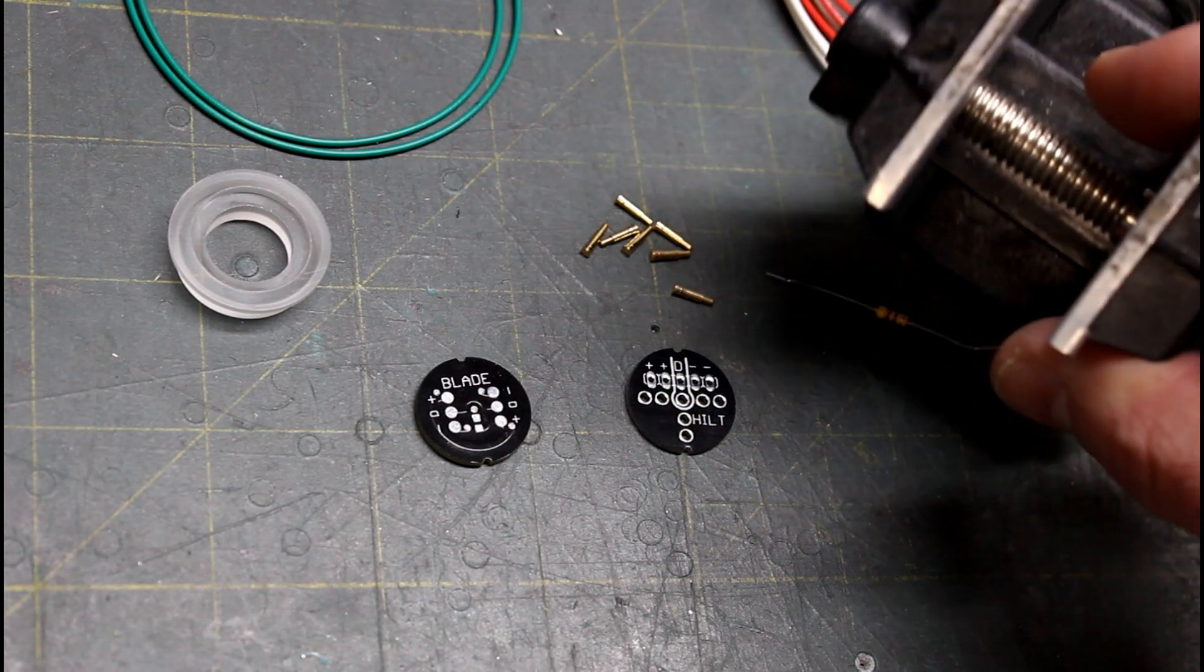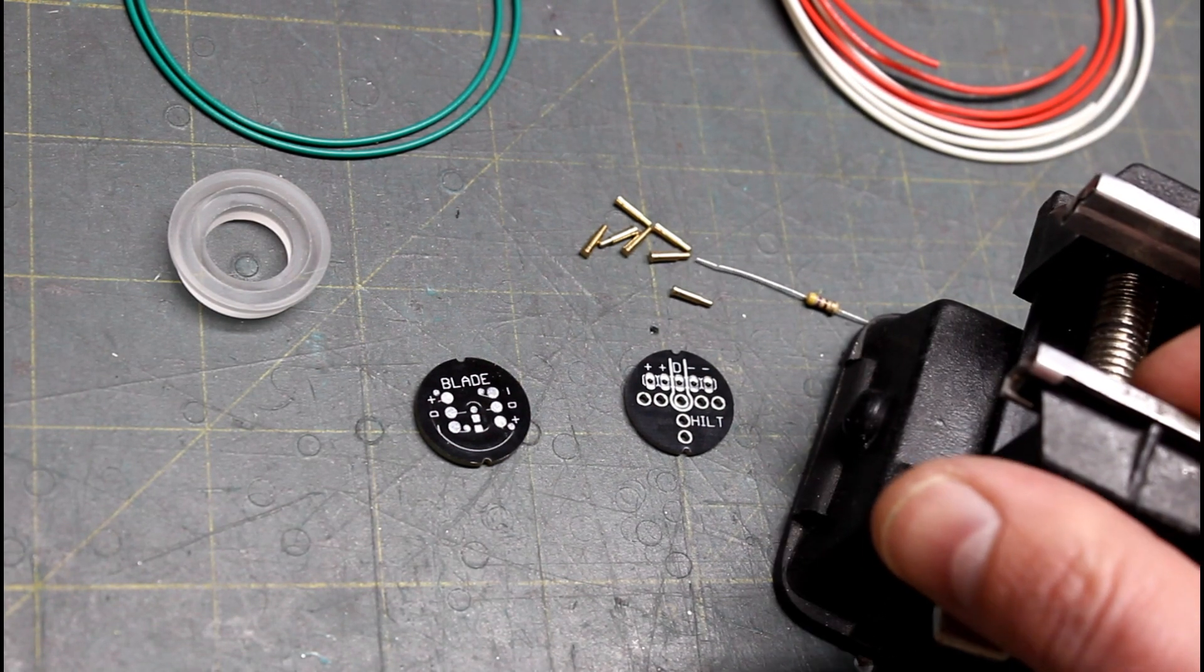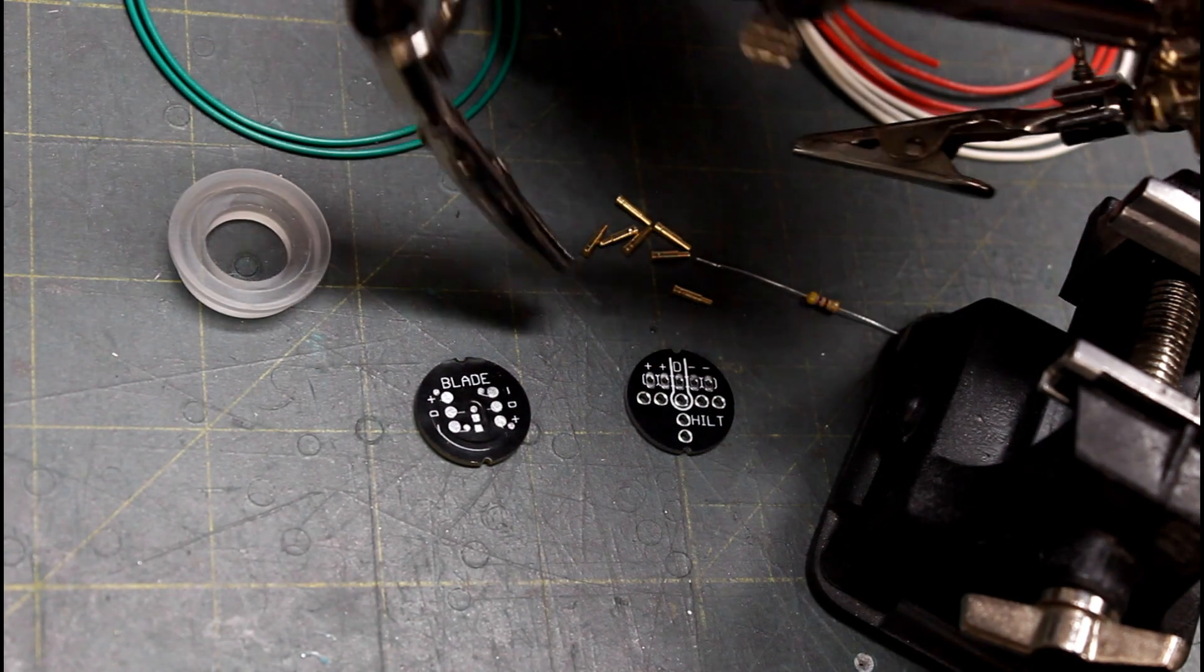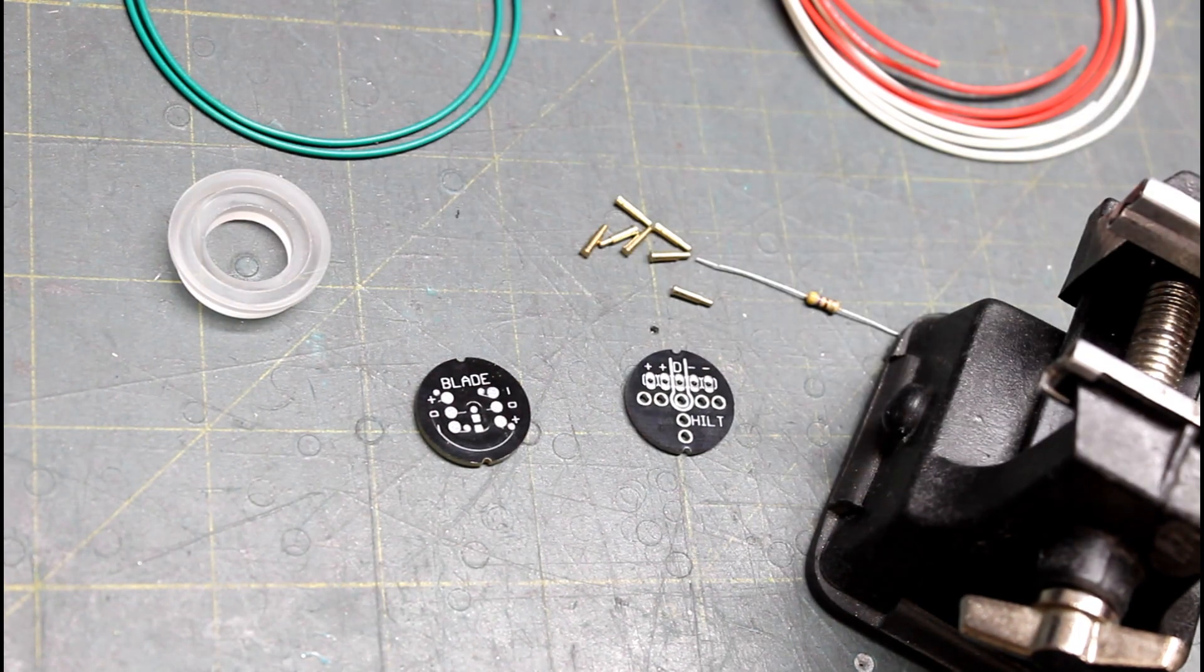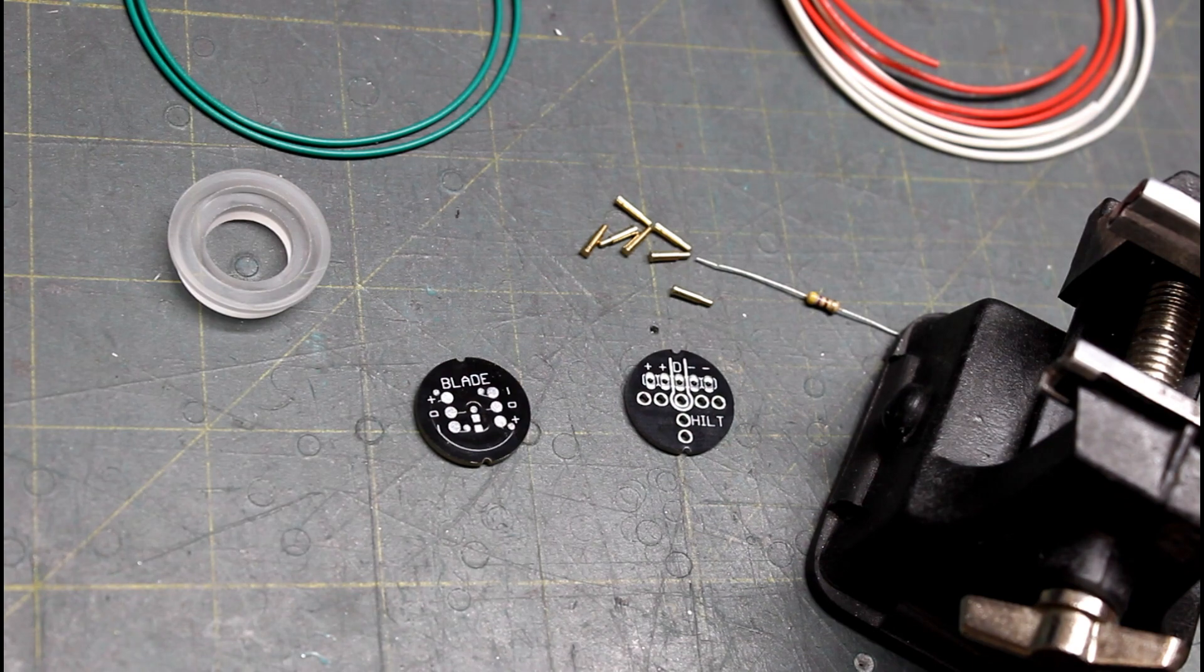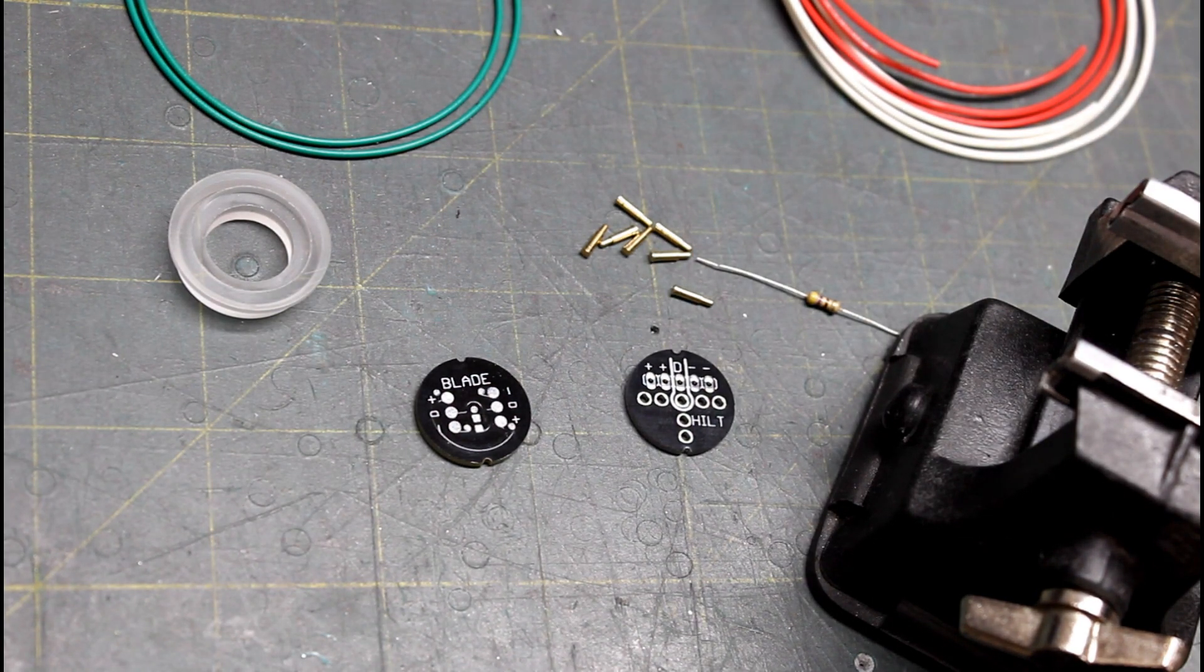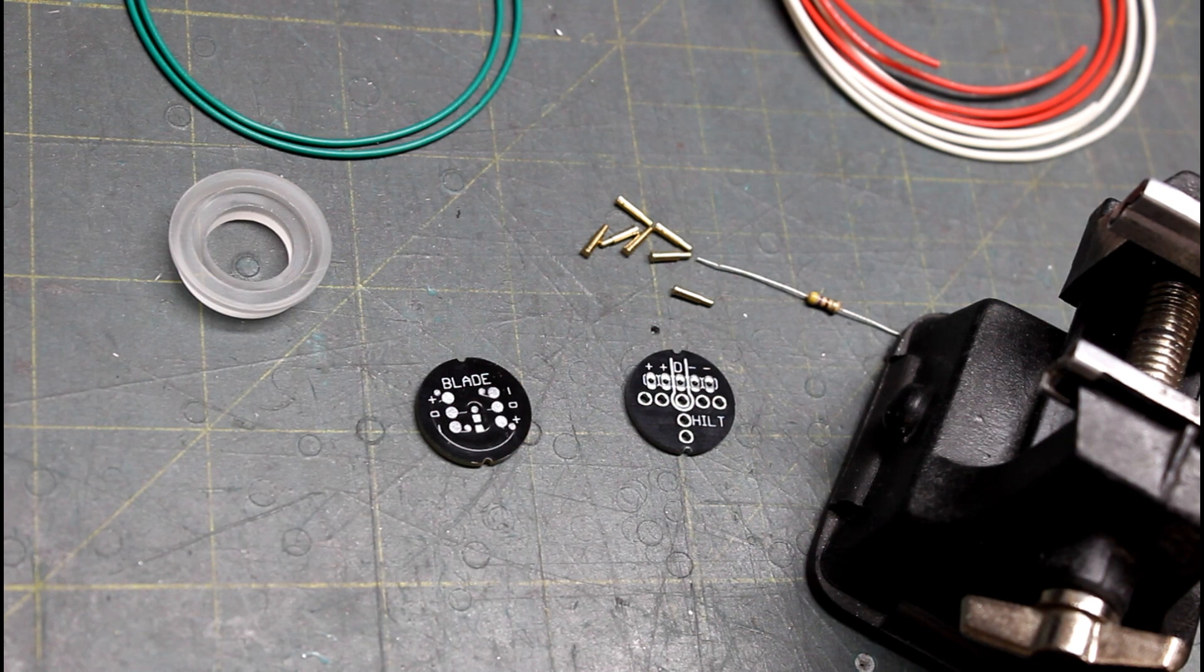You're going to need some kind of hobby vice, but if you don't have a hobby vice, you can get by with a little wood clamp. I'll show you how to do that. Also, some helping hands for the soldering is going to be really invaluable. You'll need a wire stripper of some kind. You're going to need a soldering iron and some solder, and I think that's it.